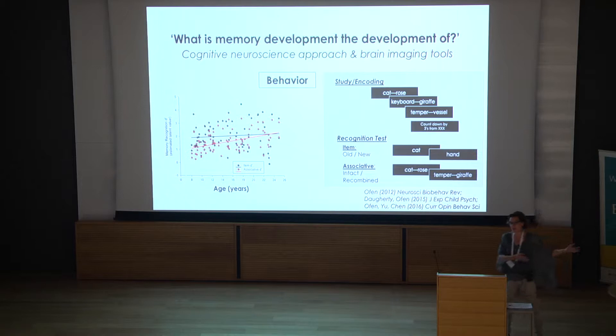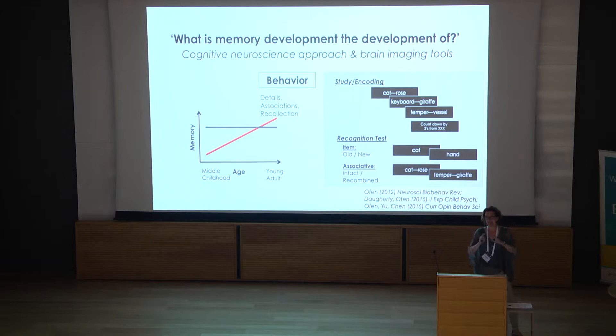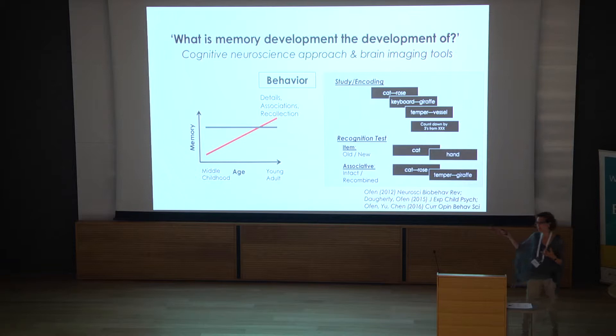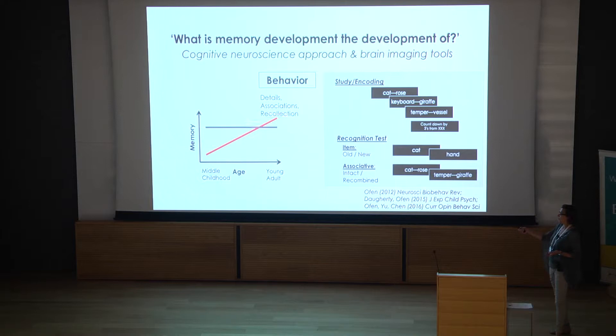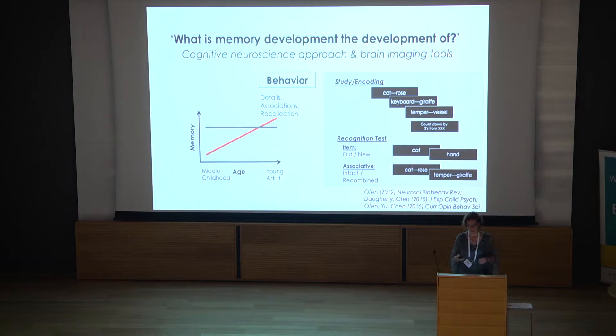We can ask how participants of different ages perform on this. We found that when you look at age — note that most of the data I'll show you is from age 8 and up — in red, performance on associative recognition (remembering the specific pairing that two words were presented together) shows age differences in terms of improvement. Whereas just remembering that they've seen a word seems fairly stable with age. Associative memory and recollection improve with age; familiarity-based item memory remains stable.